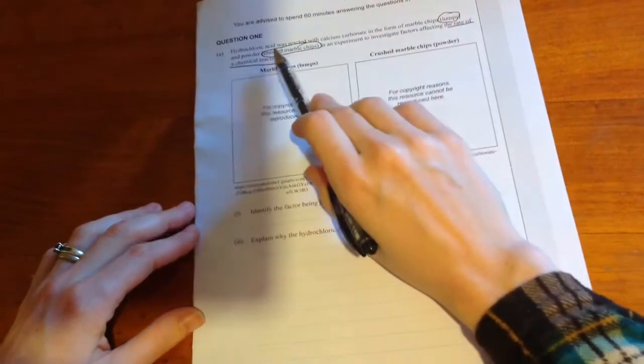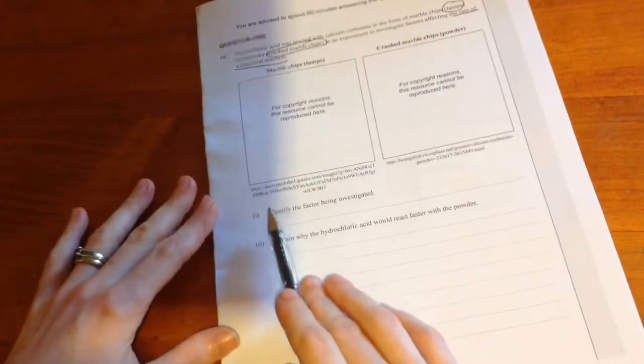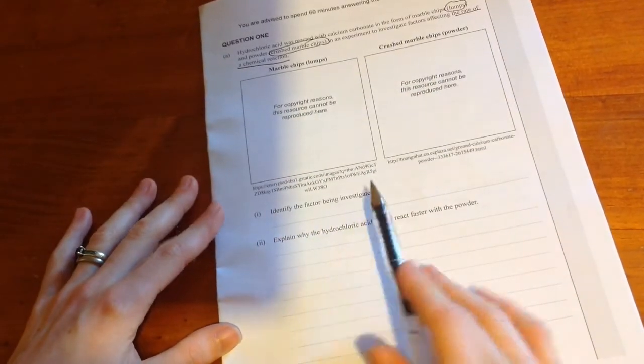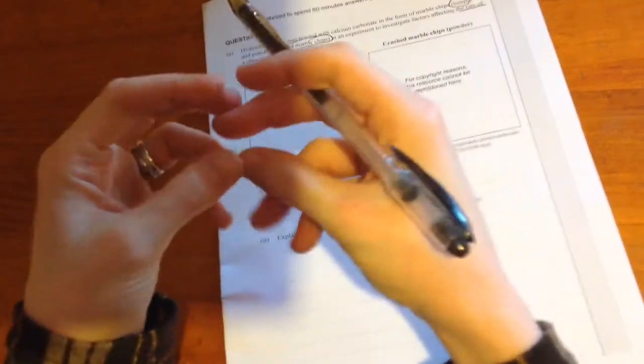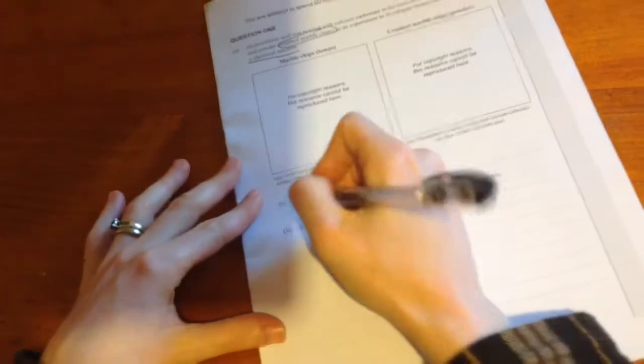Lumps versus crushed marble chips. Identify the factor being investigated. Lumps are going to be like that. Marble chips are going to have a lot more surface area.